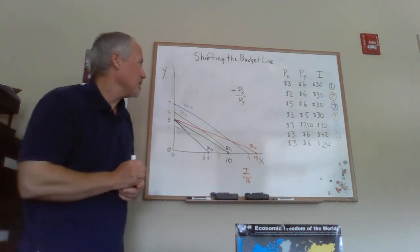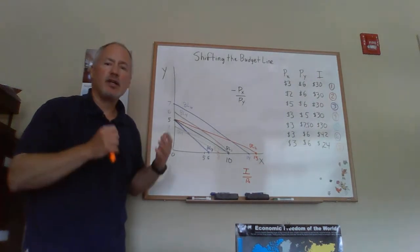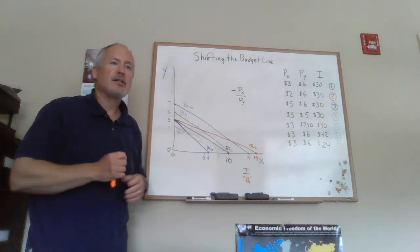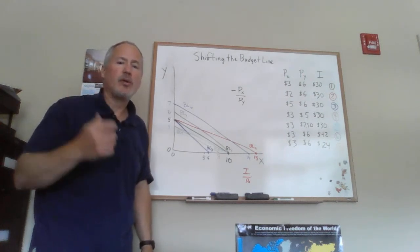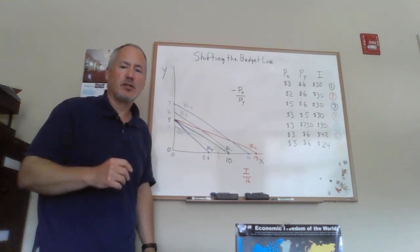This is showing you what happens again, different ways that the budget line could either shift or pivot as the price of the two goods or income changes. So now we know how the budget line moves in different circumstances.